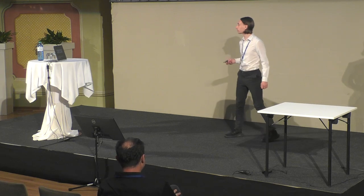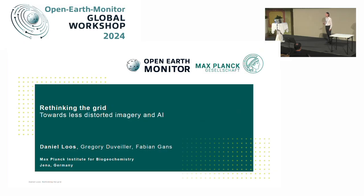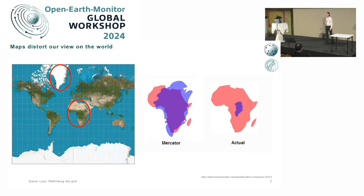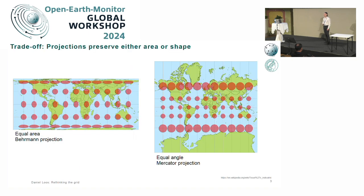Thank you very much for the kind invitation. Today I'd like to rethink the grid towards less distorted imagery and this new coming-up buzzword called AI. The thing is, maps distort our view on the world. If you compare the size of Greenland and Africa, for instance, on the map it looks almost the same, but in actual reality it isn't. And it does not only distort the views of our eyes, but also those of machine learning models.